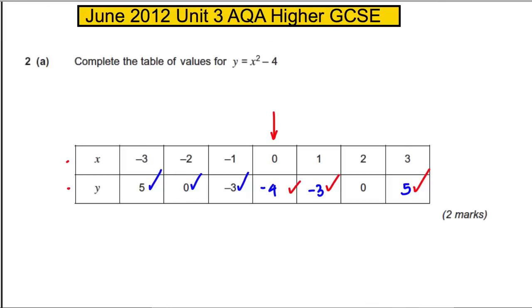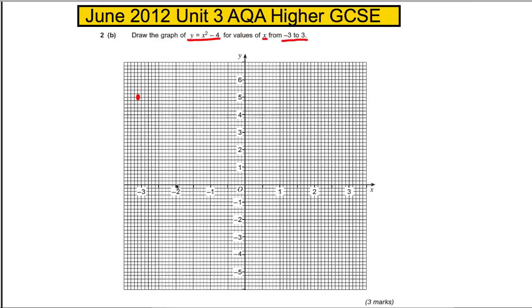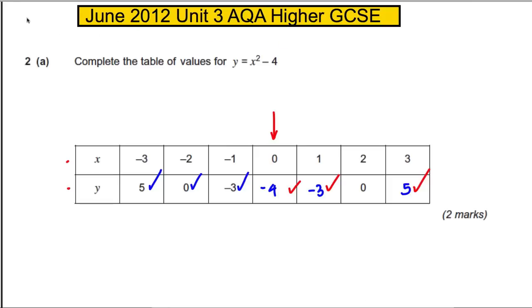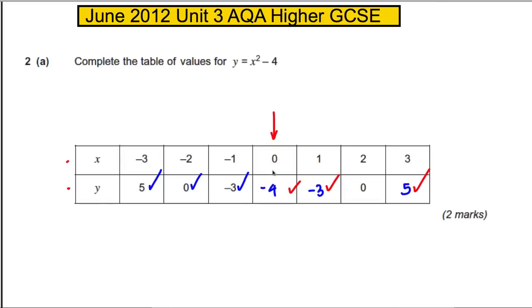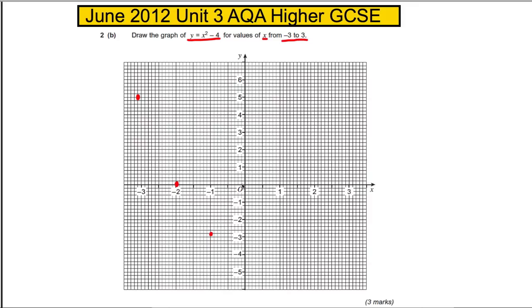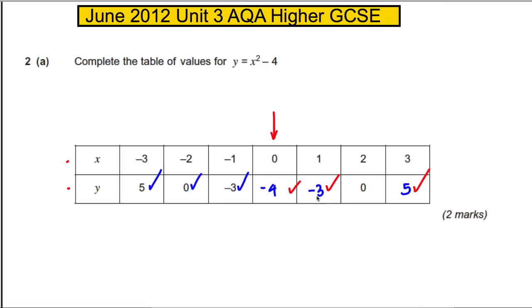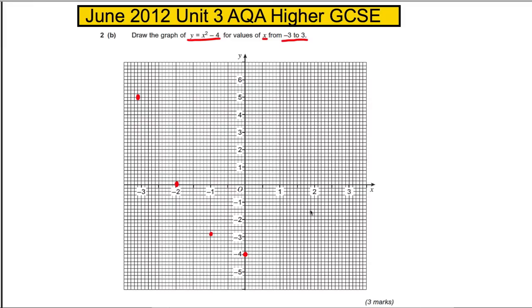Negative 2 goes with 0, so x is negative 2, y is 0 there we go. Negative 1 negative 3, so negative 1 negative 3. 0 negative 4, so when x is 0, y is negative 4. Then we've got 1 negative 3, 2 0, and 3 5. 1 negative 3 here, 2 goes with 0, and 3 goes back up with 5.